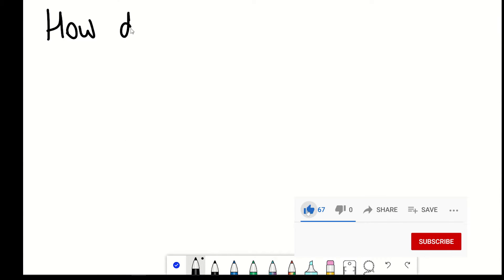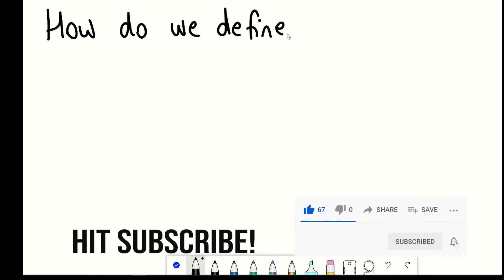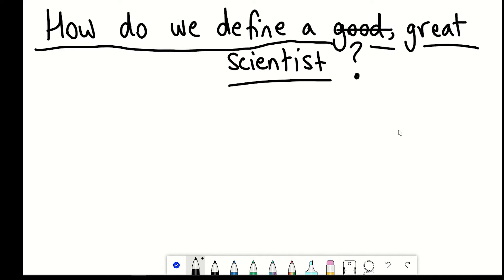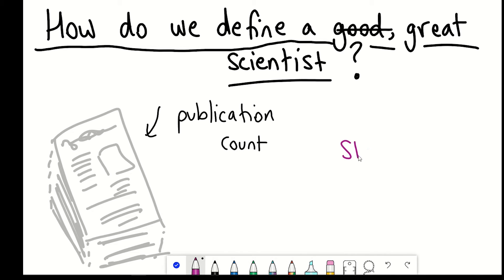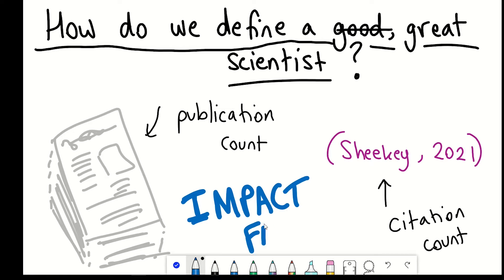So firstly, how are we defining a good, or shall I say, great scientist? Well, this is a contentious topic. Should it be based on publication counts, number of citations, impact factor, impact of what, what journal, translatability, lives saved?